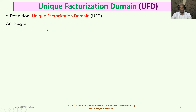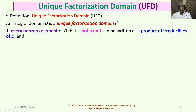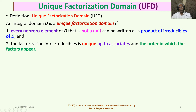Let us recall the definition of the unique factorization domain. An integral domain D is a unique factorization domain if every non-zero element of D that is not a unit can be written as the product of irreducibles of D. The second condition is that the factorization into irreducibles is unique up to associates and the order in which the factors appear.